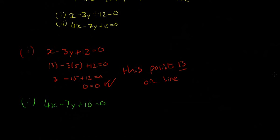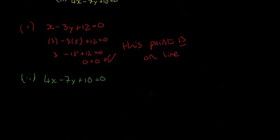Substituting our point (3, 5) into this equation: 4(3) - 7(5) + 10 = 0, which becomes 12 - 35 + 10 = 0.